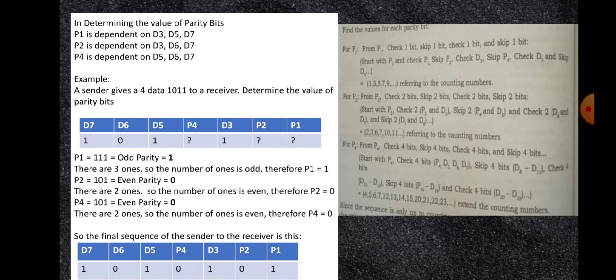In determining the value of parity bits: P1 is dependent on D3, D5, and D7. P2 is dependent on D3, D6, and D7. And P4 is dependent on D5, D6, and D7.